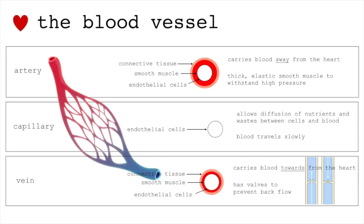Arteries carry blood away from the heart. Artery, away — AA. That's how you memorize it. It has a thick, elastic, smooth muscle to withstand high pressure, so it has a layer of endothelial cells and connective tissue.